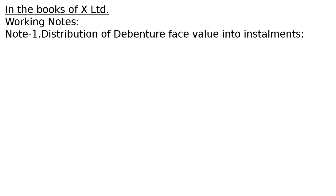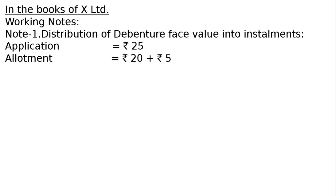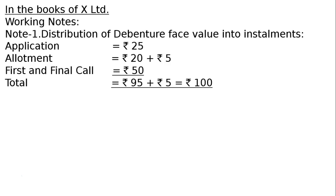Working notes: distribution of debenture face value into installments — Application ₹25, Allotment ₹20. The discount is not specified with any particular installment, so where the installment name for a discount or premium on issue of debentures is not given, it will always be considered with allotment. The first and final call is ₹50. Total is ₹95 plus ₹5 discount, equal to ₹100.